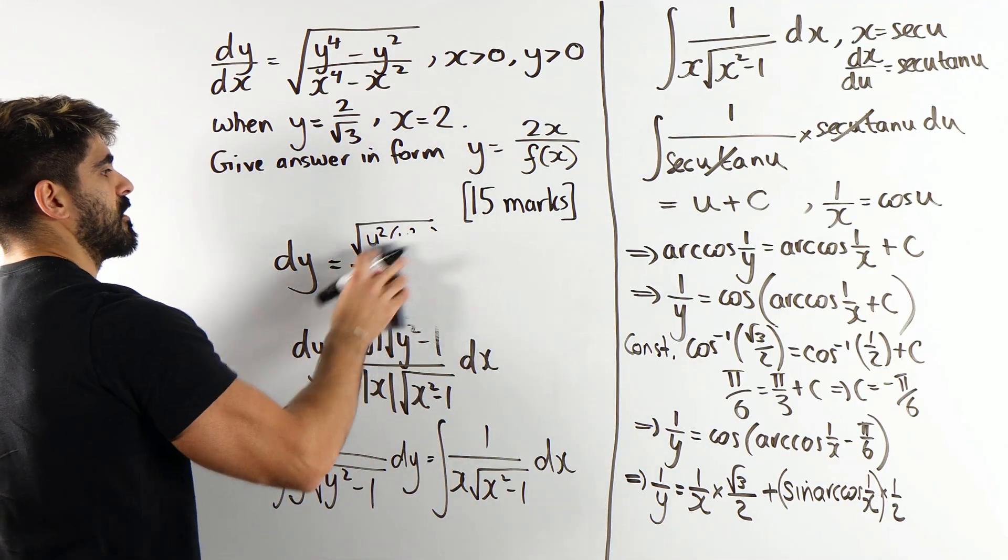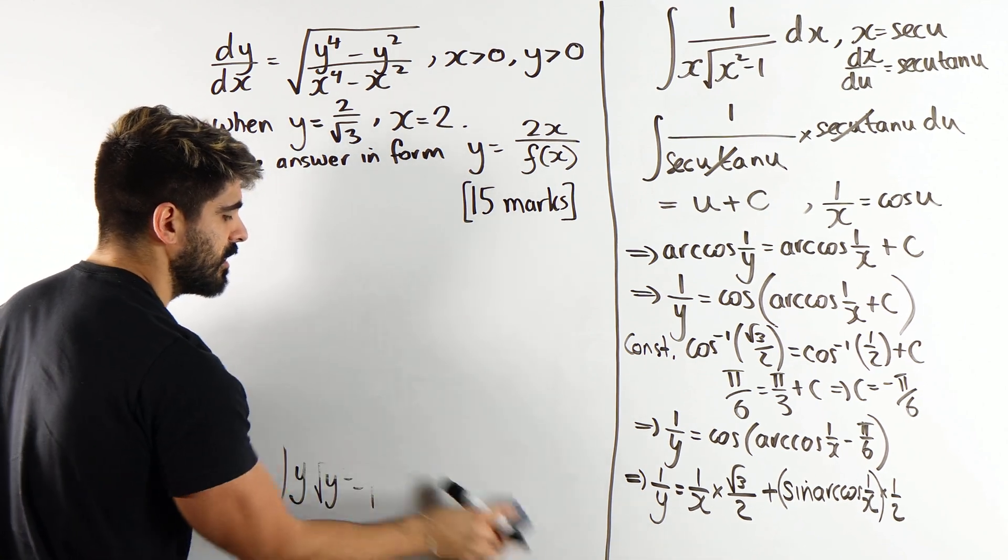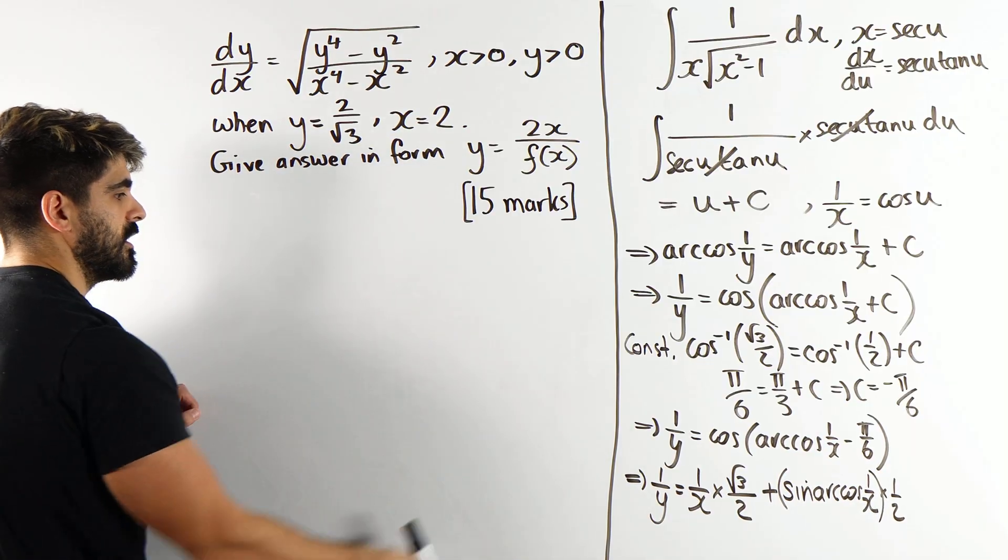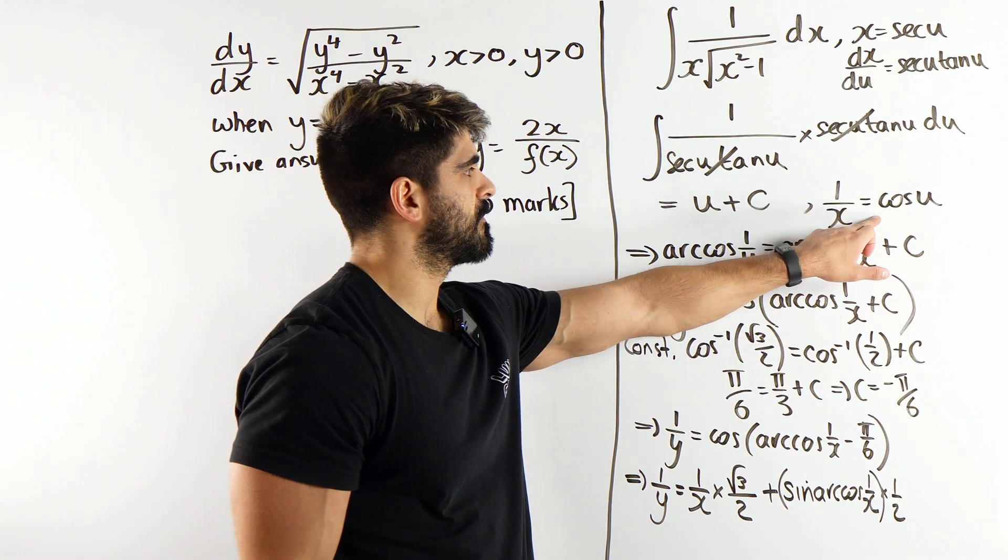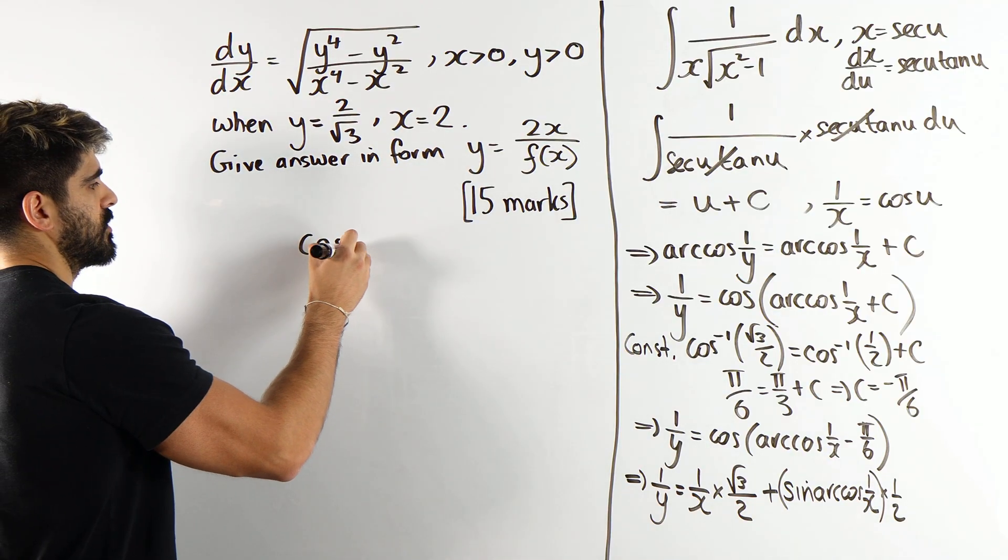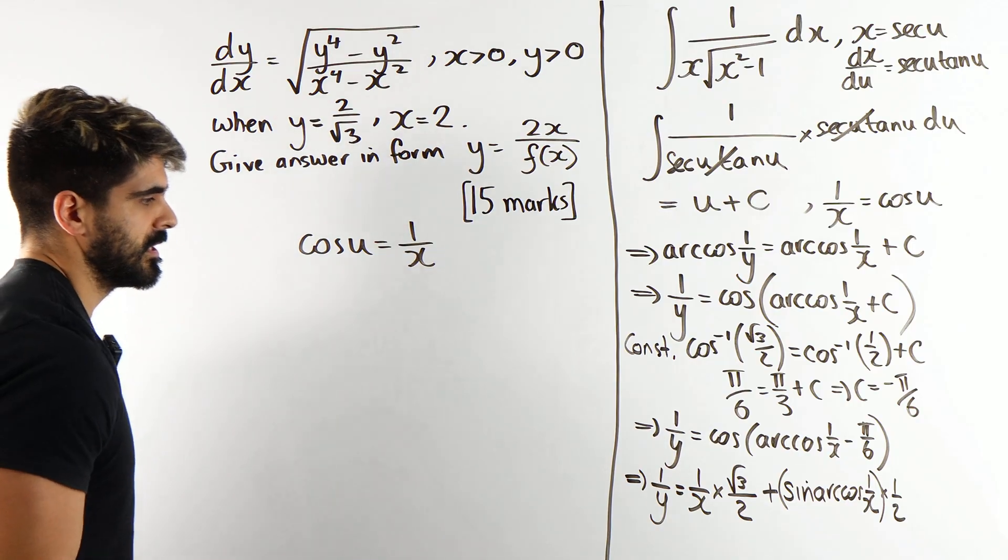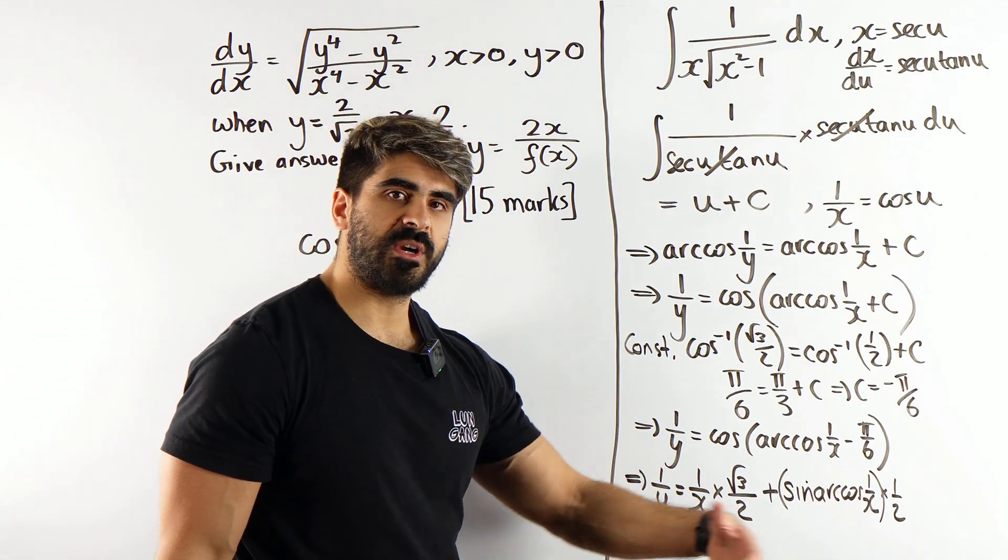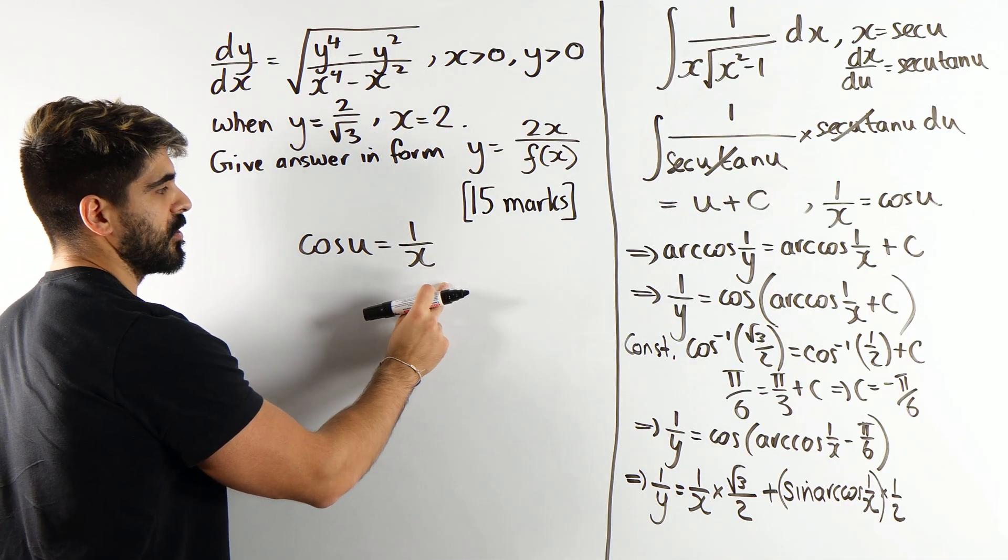Let's go back over here. It's not as bad as you guys think. I've done loads of questions like this on TikTok. If you guys want to check it out, Neil does maths. So, we go back to this. Yeah, 1 over x is cos u. Cos u is 1 over x. So, the reason we're doing that is u, remember, was arc cos of 1 over x. If you rearrange for u, you would get u equals arc cos of 1 over x.